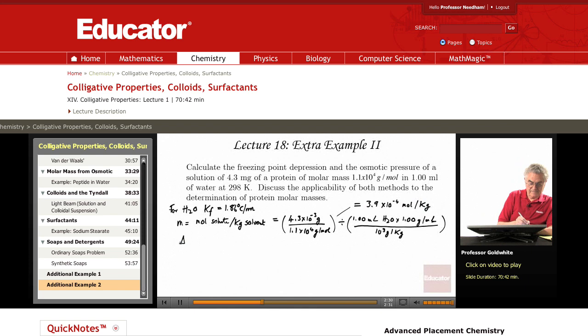So, delta Tf, the freezing point depression equals Kf times the molality equals 1.86 degrees C per m times 3.9 times 10 to the negative 4 m equals 7.3 times 10 to the negative 4.